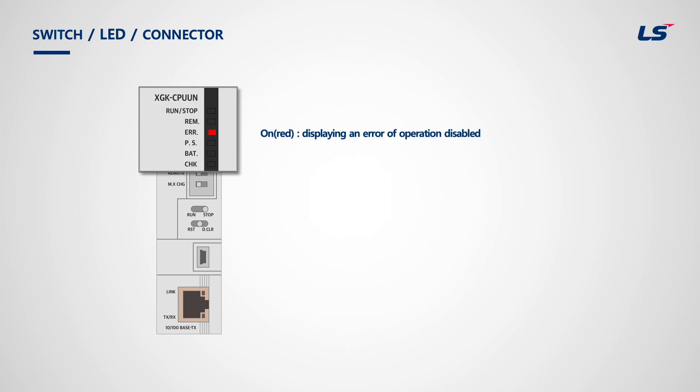The third lamp from the top is the Error LED. If an error occurs, PLC output is blocked, and users should take action according to an error flag. The PLC will also stop as the ERR LED is turned on in red.